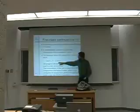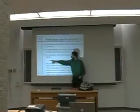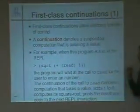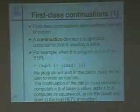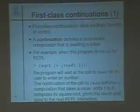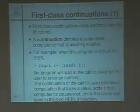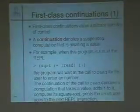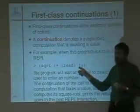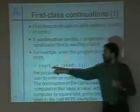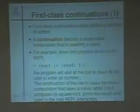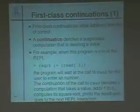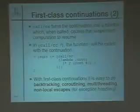A continuation basically denotes a suspended computation that is waiting to receive a value. And an example is the evaluation that you have here. If you type, as you read it, I'll print the square root of the sum of the call to read and one. When this is run, the call to read actually suspends the program waiting for the user to input the number. So you can think of the program as having a continuation, a suspended continuation, that is waiting for the value that read will return. And then this continuation will go ahead and add one to the value that it receives, and then compute the square root, and then print the result, and then go on to the next read-eval-print interaction. So that's sort of the basic idea of continuations.